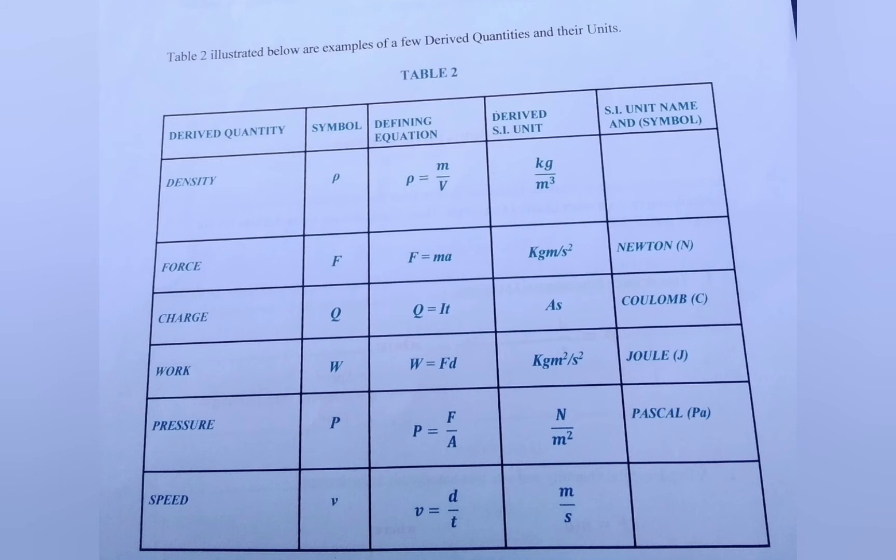Table two highlights some common derived quantities that we will be looking at at a later date. Each of which is denoted by its own symbol and each of which has its own defining equation that describes it. Arising from the defining equation you have the derived SI unit and these are very important as the derived SI unit can give you the equation and vice versa.